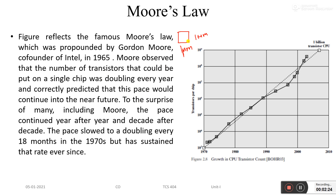Gordon Moore showed that the number of transistors on a microchip would double every two years. It was later found that the doubling was actually occurring every 18 months rather than every two years.